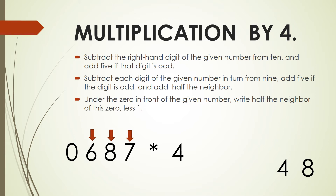Next one is going to be 9 minus 6, which is 3, plus half of the neighbor, which is 4. So 3 plus 4 is 7. We write that 7. Now we are under the 0. We need to find half of the neighbor — in this case the neighbor is 6, so half of it is 3. Minus 1 gives a total of 2. We write that 2, and we have the answer.